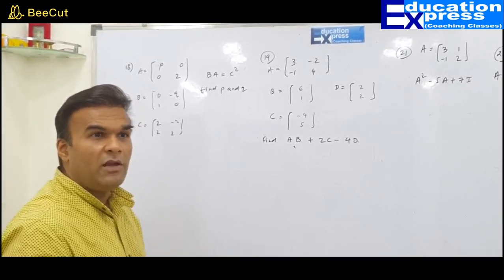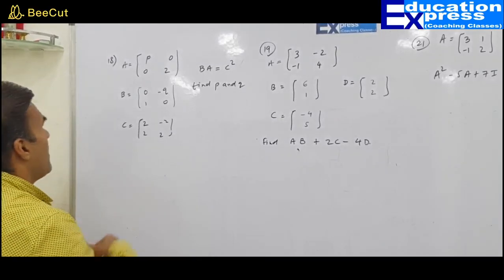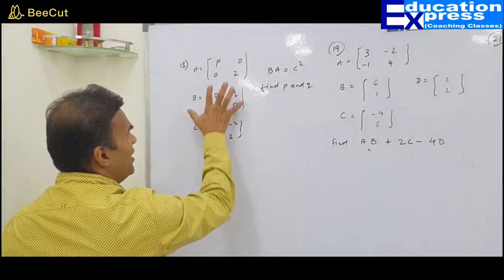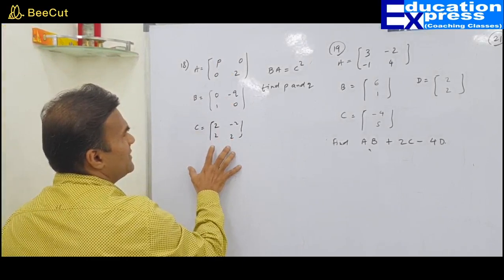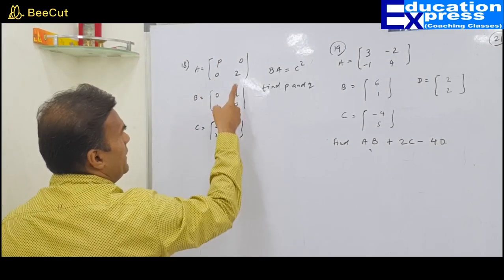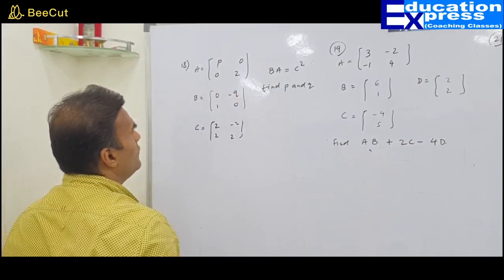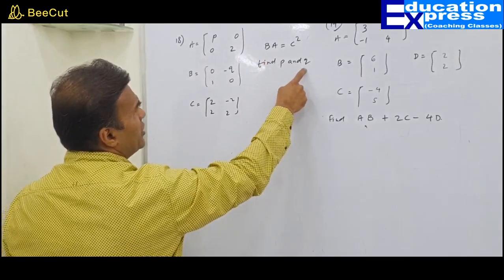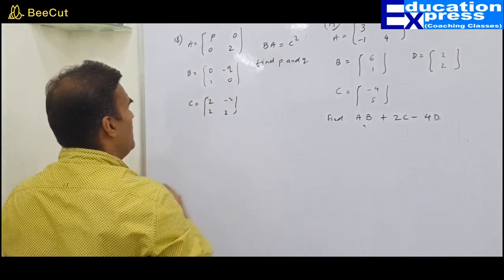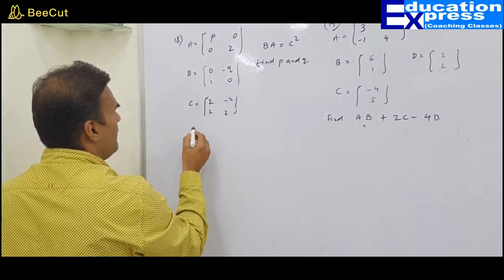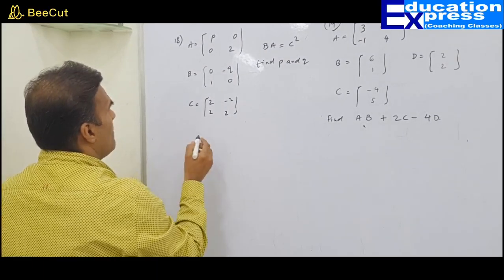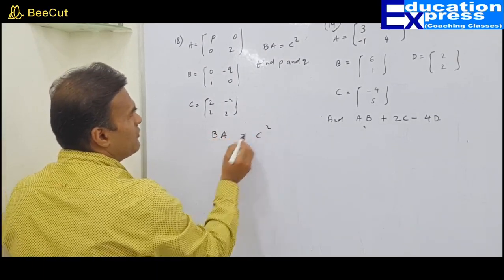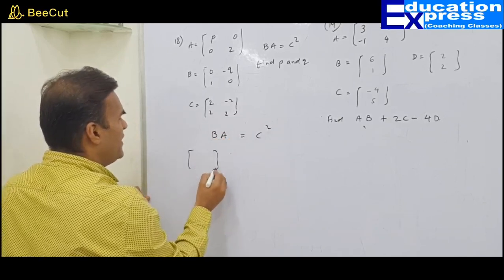Analyze them properly for your understanding. Matrix A, Matrix B, and Matrix C are given to us. There are two unknowns, P and minus Q. What they have mentioned is: find P and Q if matrix BA equals C squared.